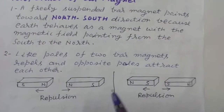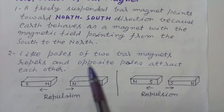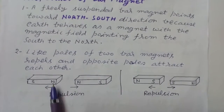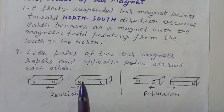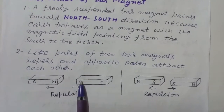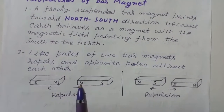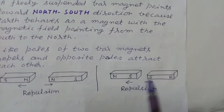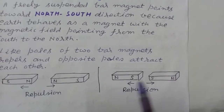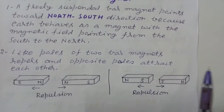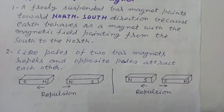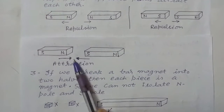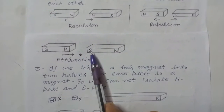Like poles of two bar magnets repel and opposite poles attract each other. Suppose these are two small bar magnets — if you place them so their north poles are facing each other, they will repel. Similarly, south poles facing each other also repel. But opposite poles, north pole and south pole of two magnets, attract each other.